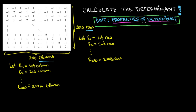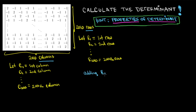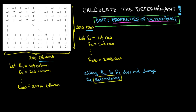We will use row operations and column operations. Notice that if we add the second row to the first row, the first row will become 1, 1, and then zeros to the end. By the property of the determinant, adding the second row to the first row gives a new matrix with the same determinant value. This is an advantage — we can make a nicer matrix. Let us call this matrix A.